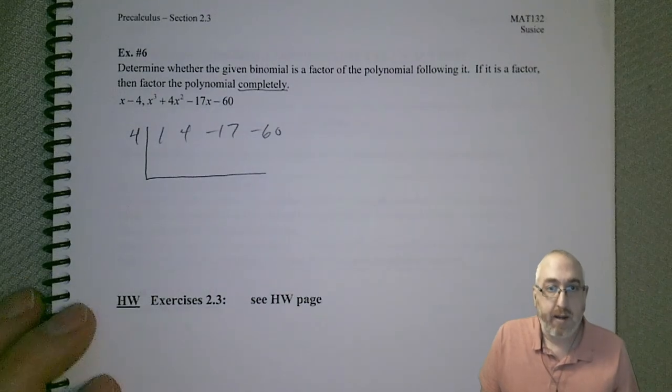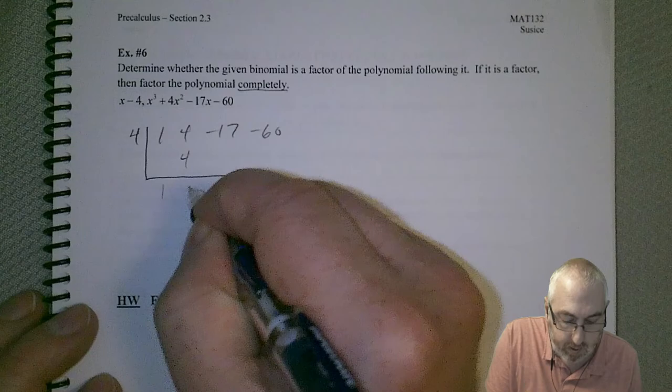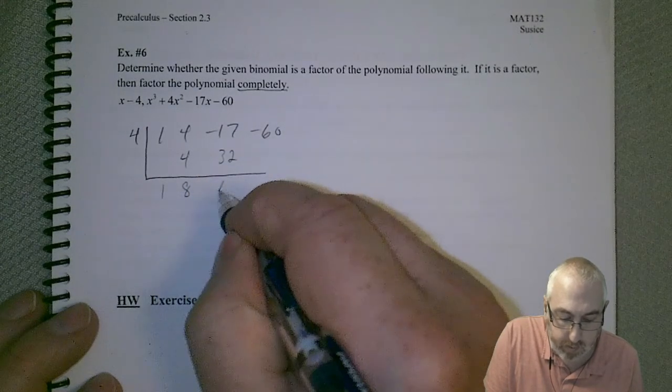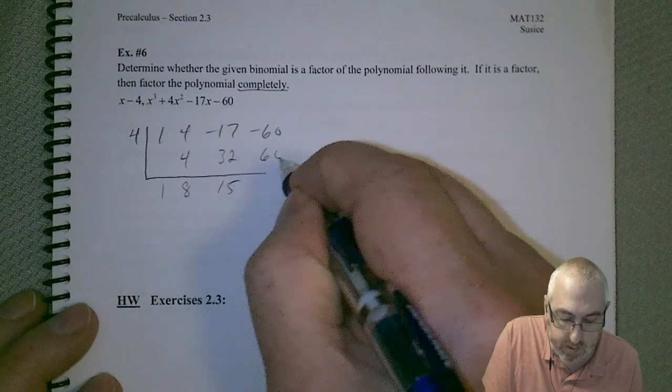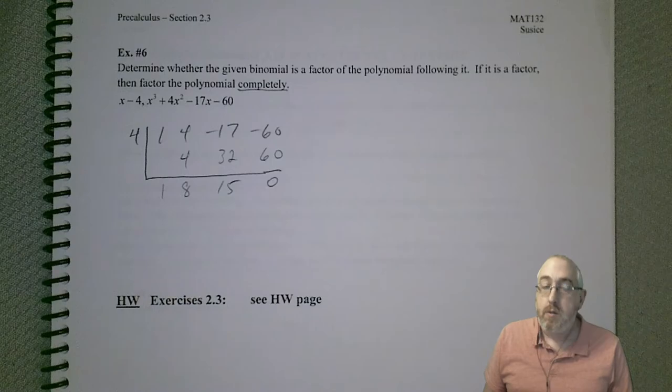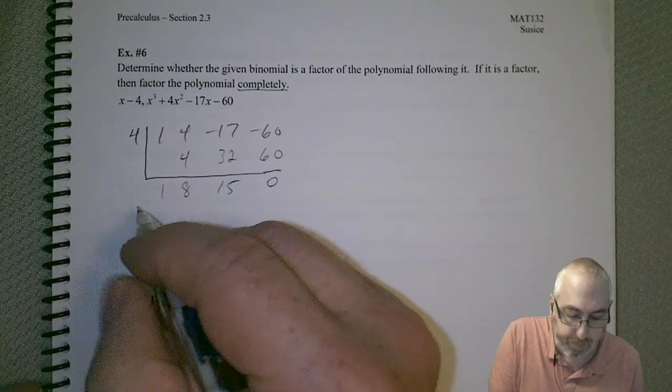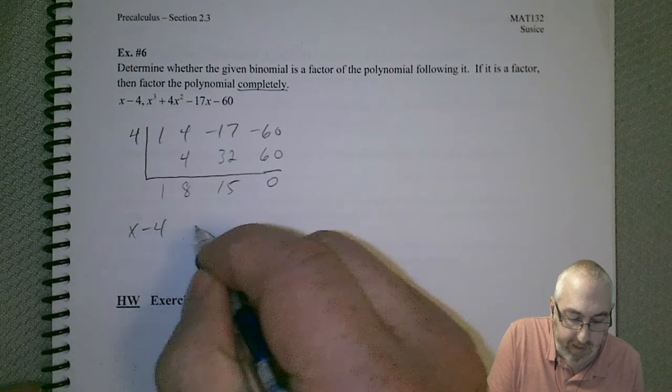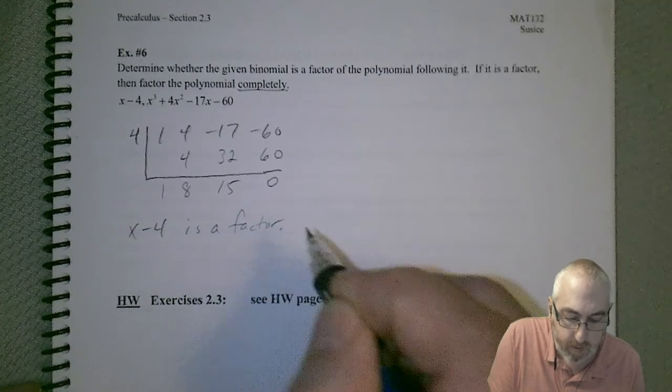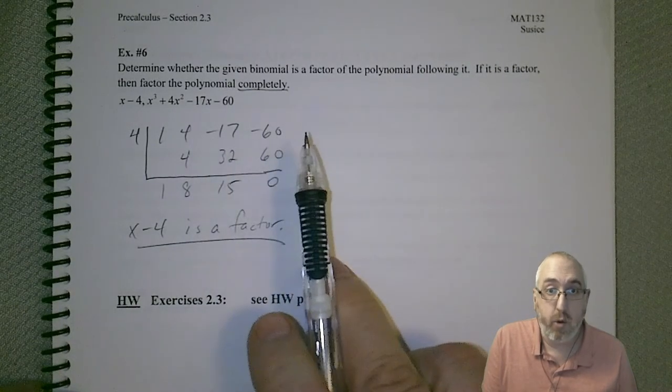So, let's get that down and let's multiply and add. So, let's say we have 15, 60. And, lo and behold, we get a 0. So, we can then conclude that x minus 4 is a factor. So, now, if it is a factor, factor the polynomial completely.